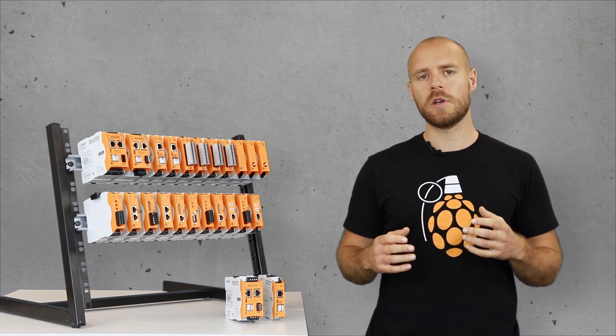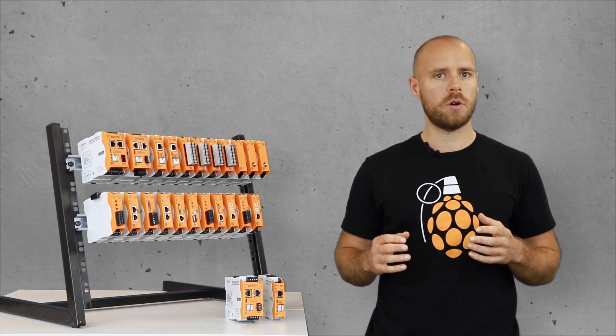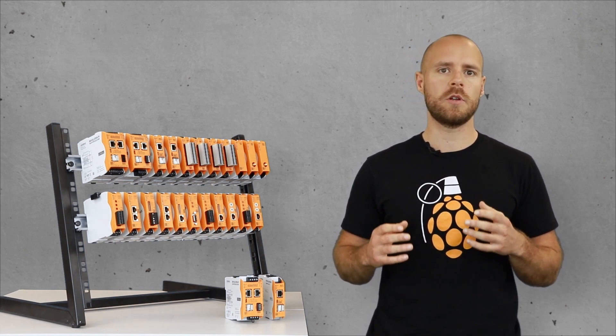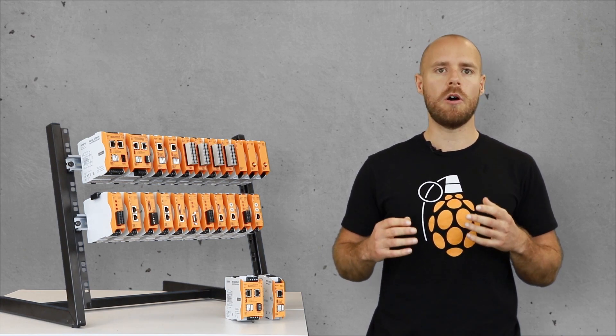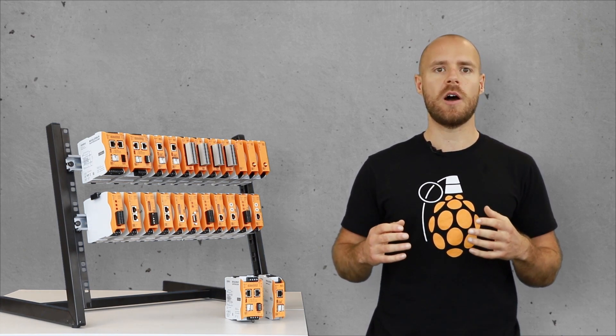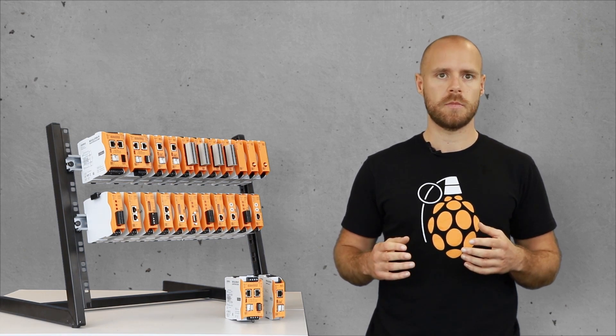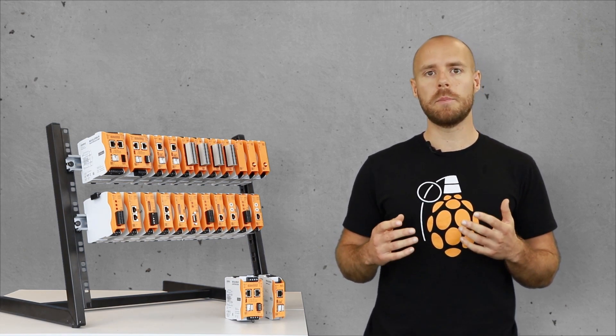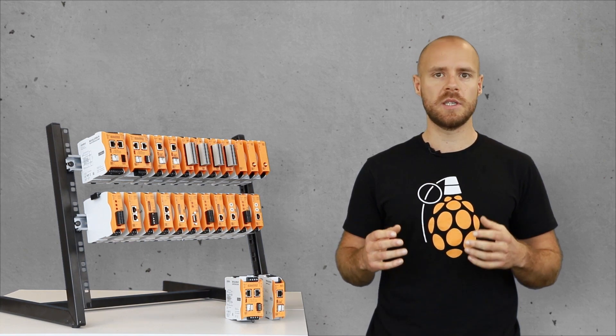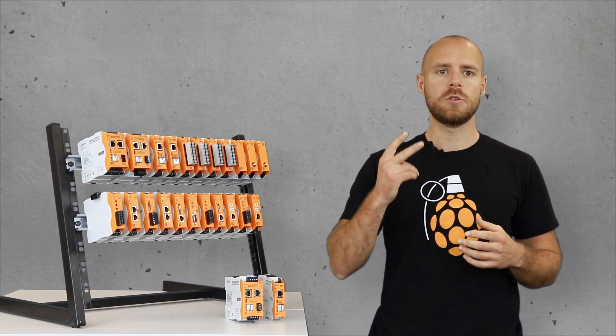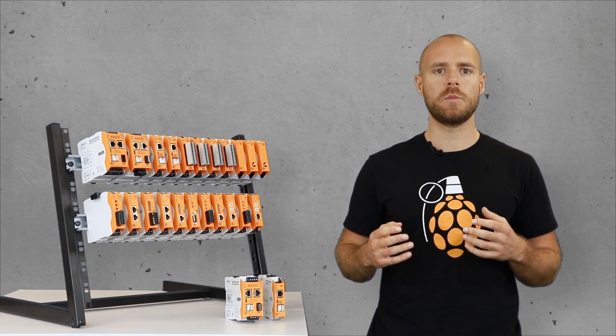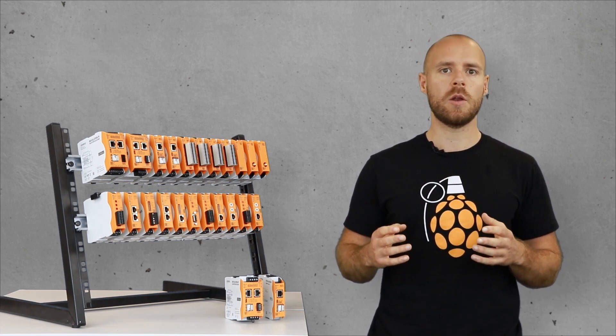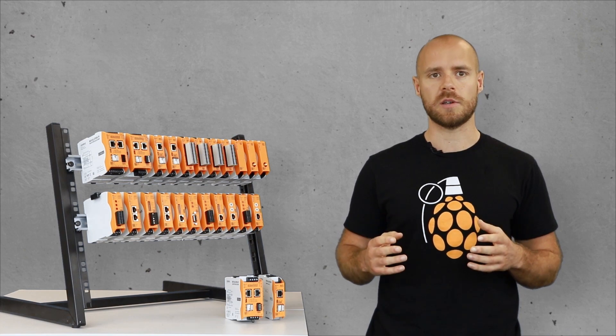While the position of the I/O modules is not important, the following should be noted for the gateways. A gateway must always be attached at the outermost module. Therefore, the number of connectable gateways per system is limited to two gateways. This means one can be equipped on the left and one can be equipped on the right side.